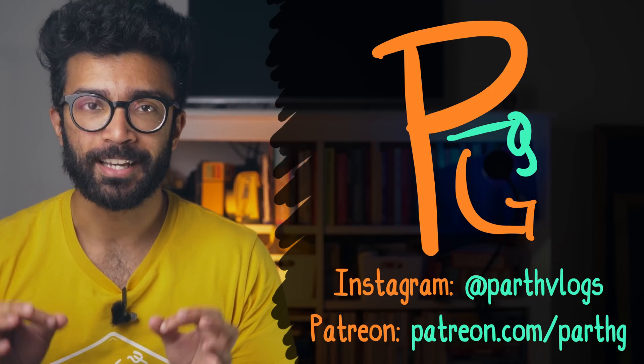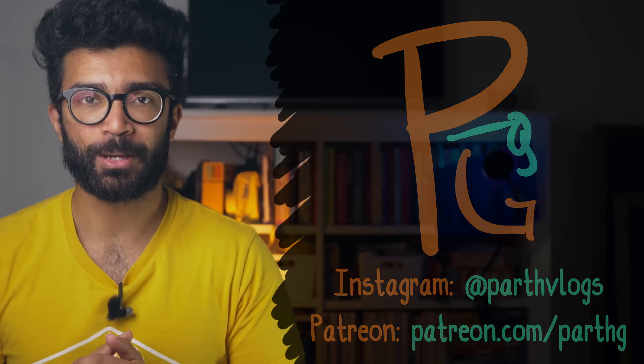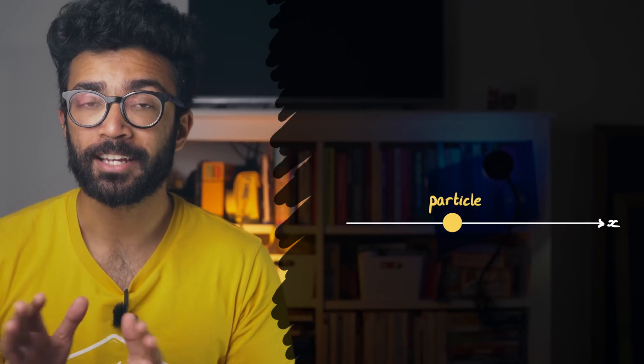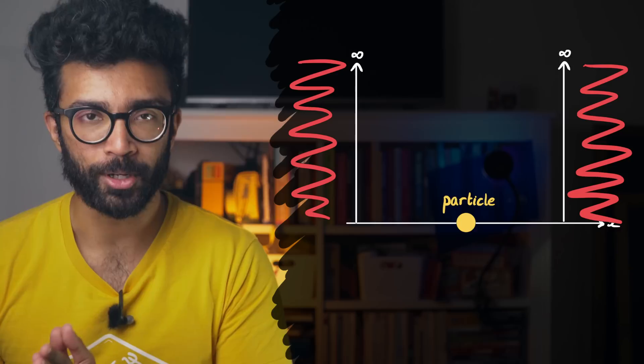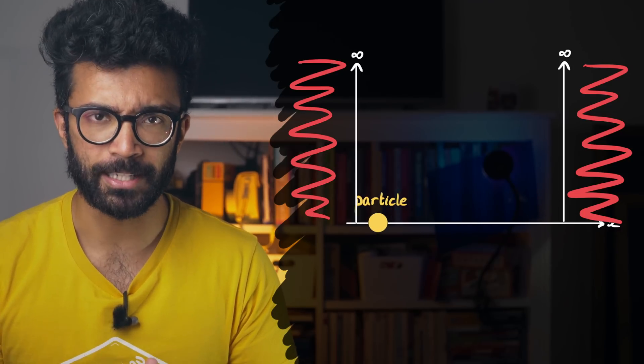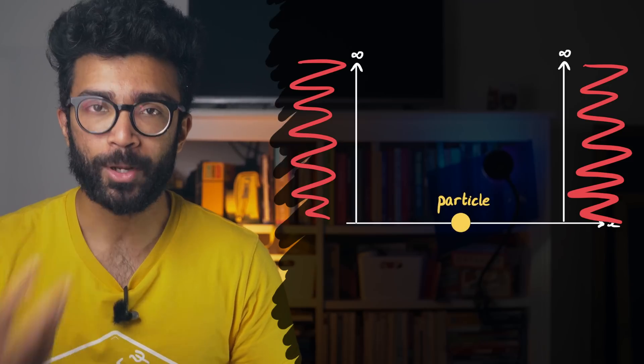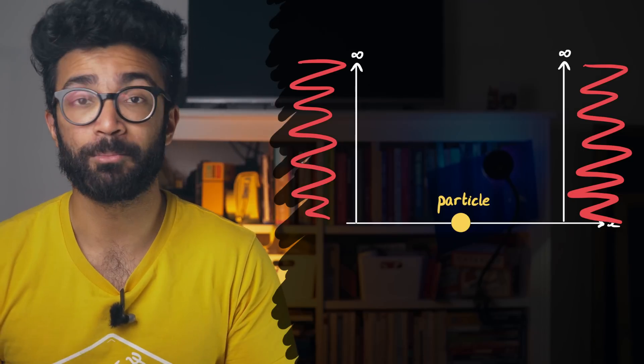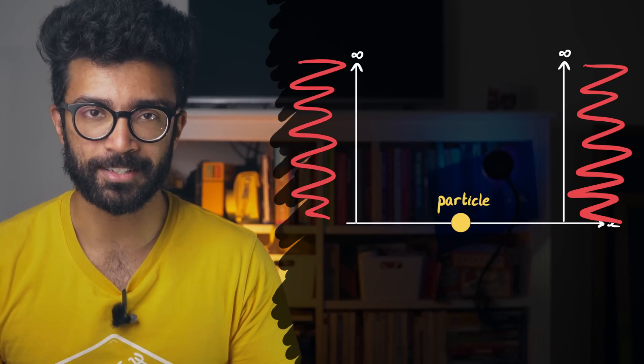In order to understand what a wave function represents, let's first imagine that we're studying a particle that is restricted to moving along a single direction and can only be found between these two points on this x-axis. The restrictions are just for simplicity, they're not necessary, because when we restrict the movement of the particle the wave function becomes a bit easier to visualize and to understand.